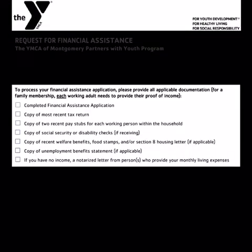You can also request financial assistance through the YMCA. This particular program is in Montgomery, but you can ask any YMCA if they are offering financial assistance. To process the application you need a completed financial assistance application, copy of the most recent tax return, copy of two recent pay stubs for each working person in the household, copy of Social Security or disability checks, copy of recent welfare benefits, food stamps, and/or Section 8 housing letter, and copy of unemployment benefit statements. If you have no income, you need a notarized letter from the person who provides your monthly living expenses.